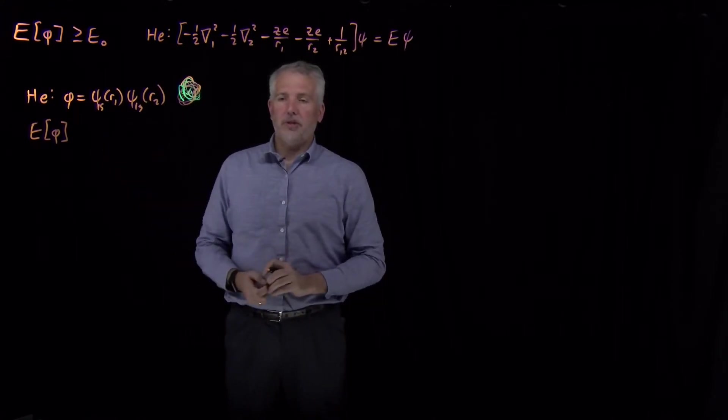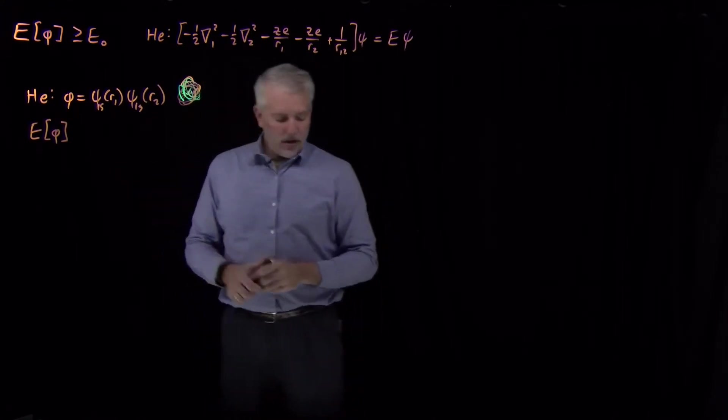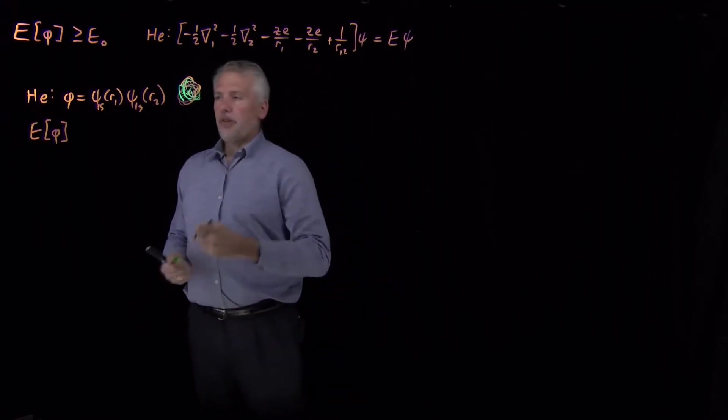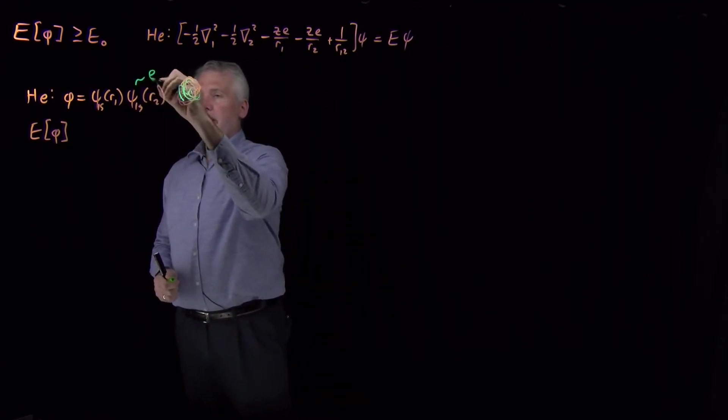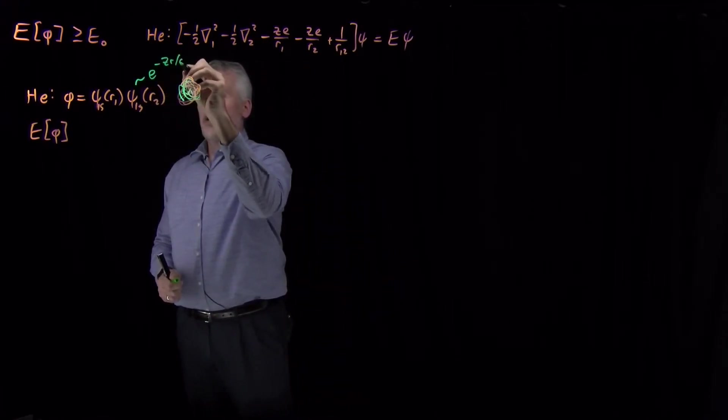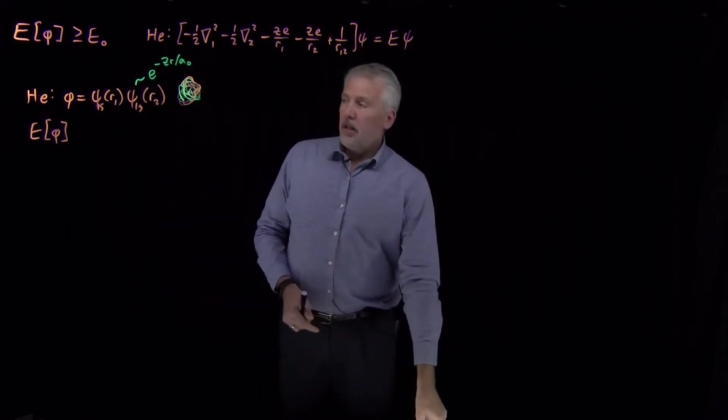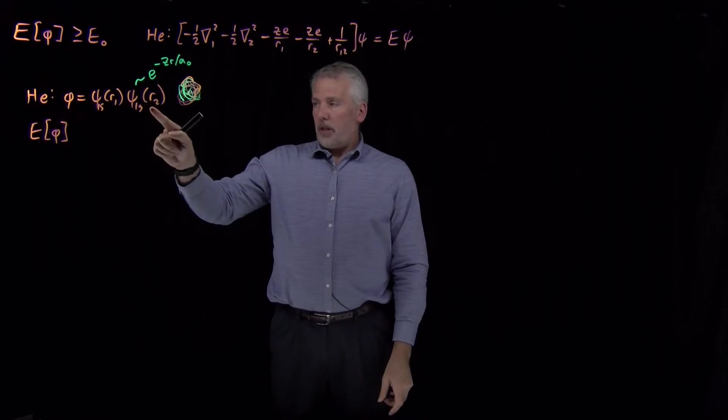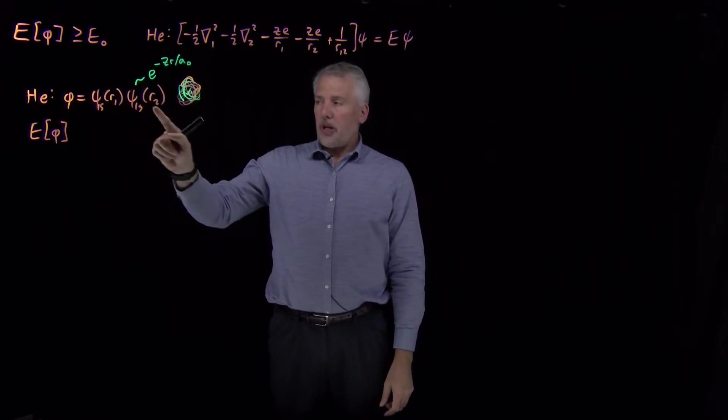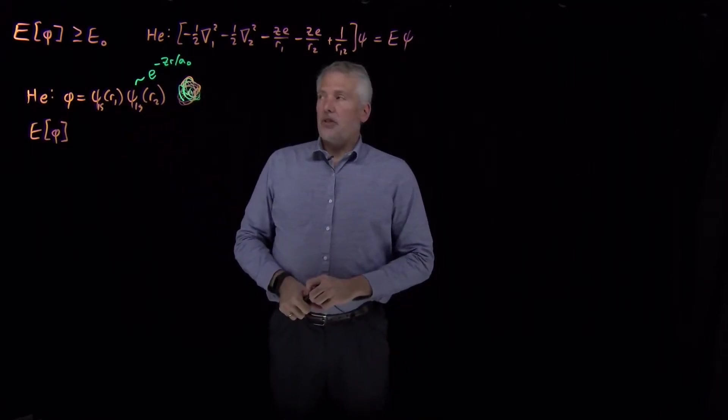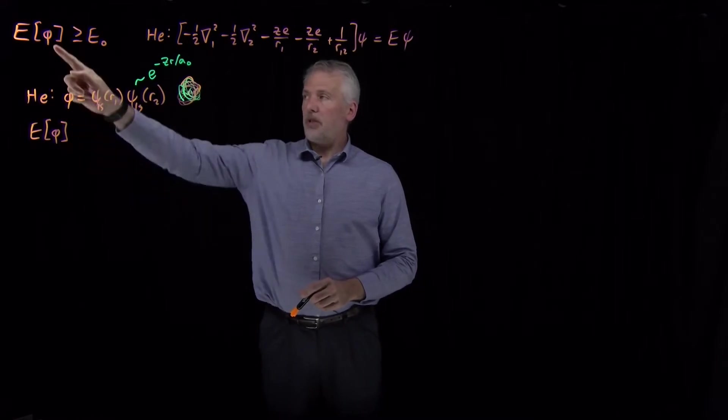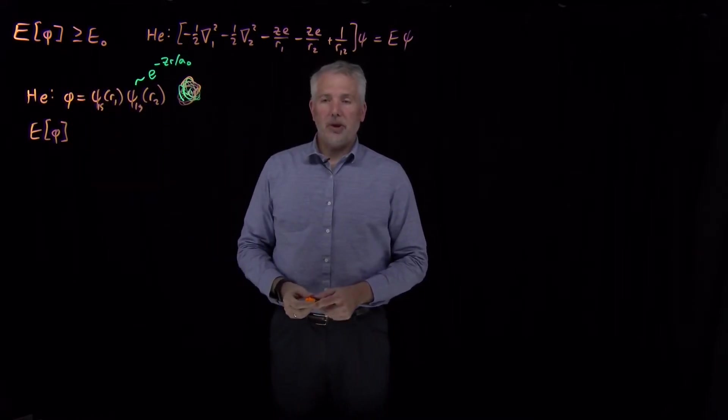So that's what we could use as a trial function if we calculate the energy of that trial function. And remember, since we've solved Schrödinger's equation for the hydrogen atom, we know what those 1s wave functions look like. Those look something like e to the minus zr over some constant that we call the Bohr radius. So we know exactly what a 1s wave function looks like. We know what the product of two 1s wave functions look like.